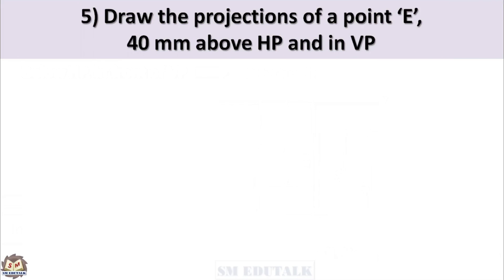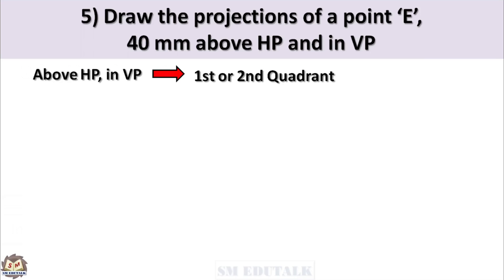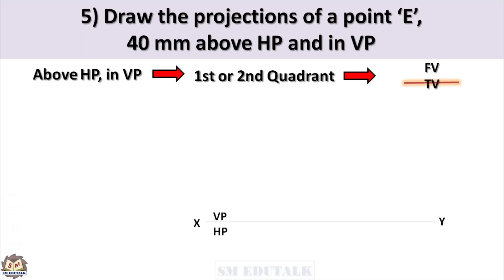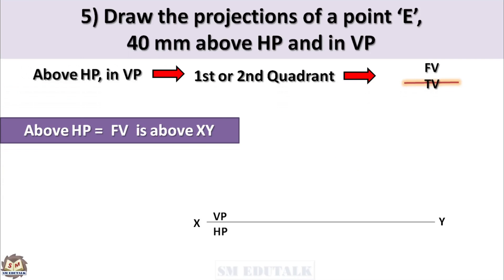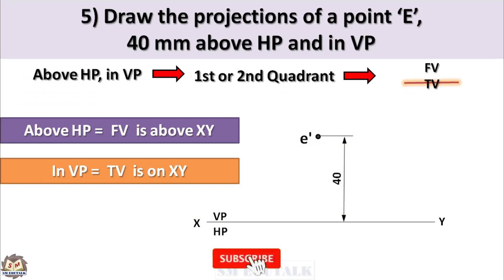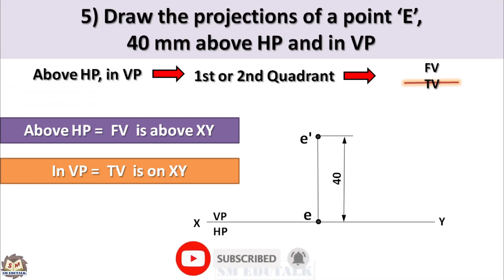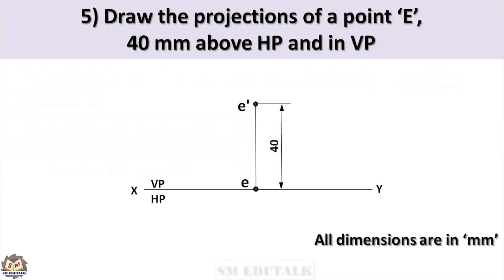Fifth problem: Draw the projections of a point E, 40mm above HP and in VP. Given condition: above HP and in VP — so point E may be in the first or second quadrant. Hence, the front view should come above the XY line and the top view should be on the XY line. Locate the front view E' 40mm above the XY line. Draw a projector vertically downward from E' until it intersects the XY line — mark that intersecting point as the top view E.